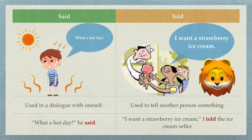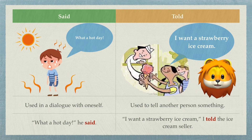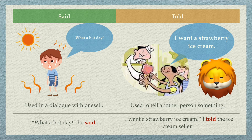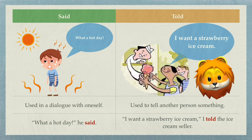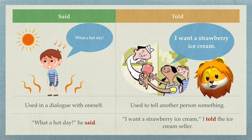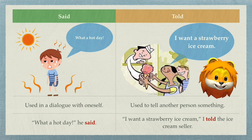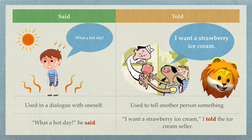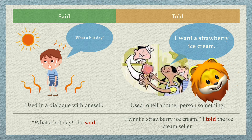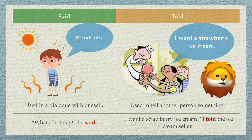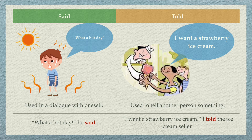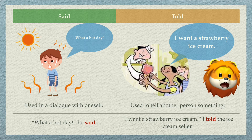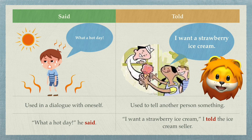Now, told is the past tense of tell. It is used when you want to give instructions or tell people something and they listen. Like in this picture, the girl wants to buy ice cream, so she told the ice cream seller she wanted the strawberry flavor. The girl would say, 'I want the strawberry ice cream,' I told the ice cream seller. So that means the ice cream seller just listens. For me, I will gather all my animals in the forest and tell them I am the king of the forest. 'Bow before me,' I told them.